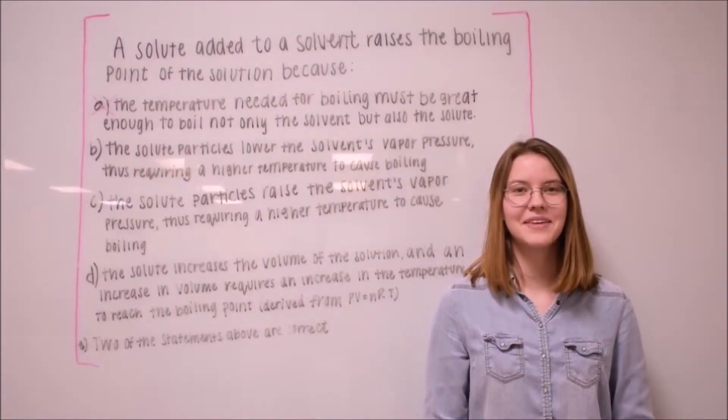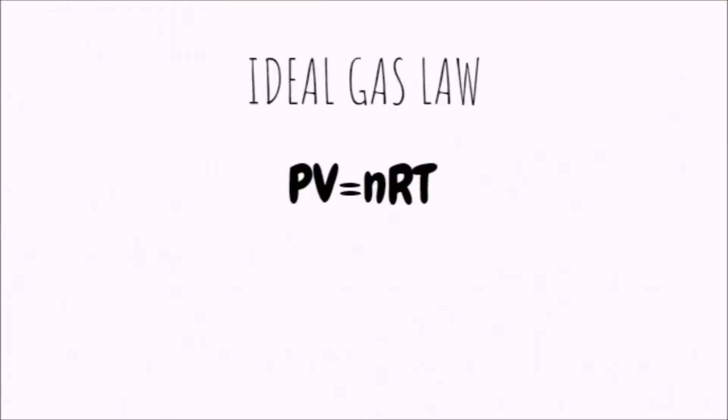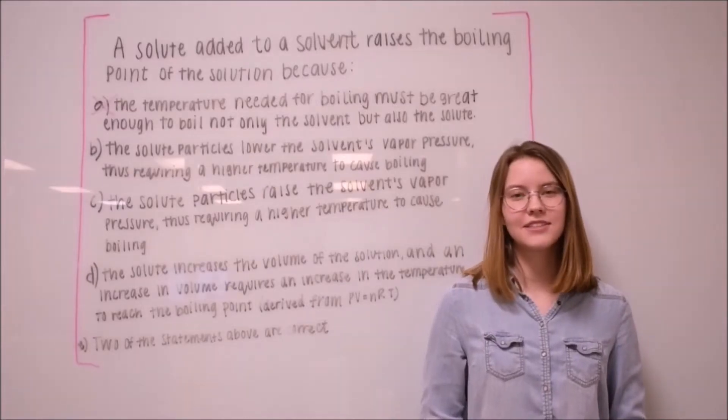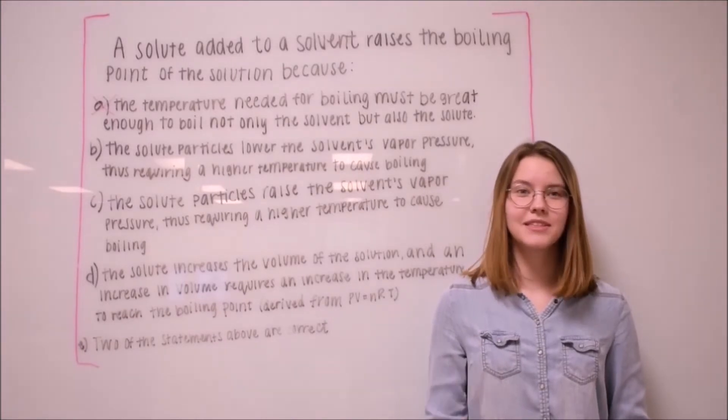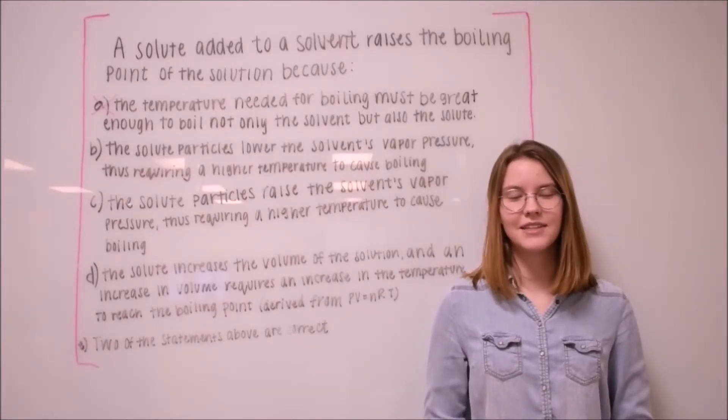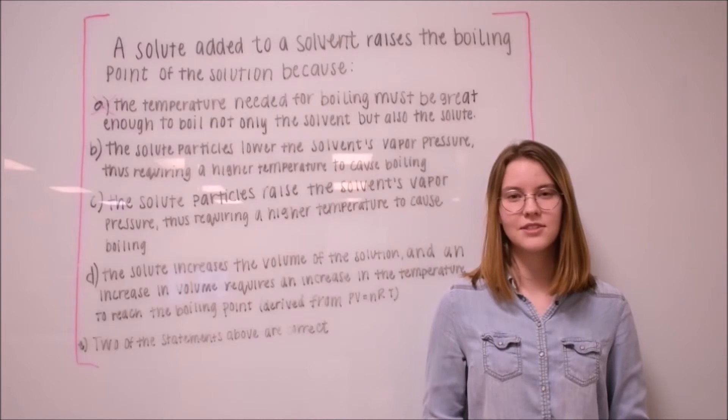Moving on to option D. PV equals NRT is the ideal gas law. In this equation, T stands for temperature, and an increase in volume may raise the temperature of the solution. But the temperature in the equation is not related to the boiling point of the solution.